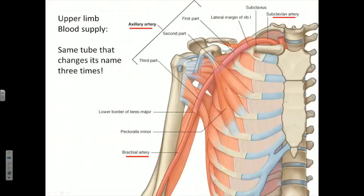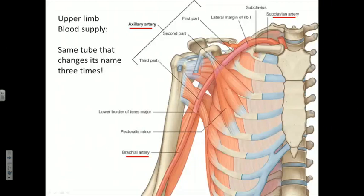Now let's look at some details regarding upper limb blood supply. The principal source of arterial blood supply to the proximal part of the upper limb is provided by the same tube that changes its name three times. It begins as the subclavian artery, arising in the root of the neck — differentially on each side — and is the principal source of arterial blood supply to the entire upper limb.